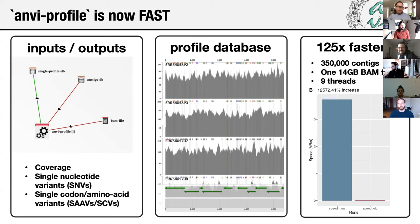In a test case with 350,000 contigs, one 14-gigabyte BAM file, run over nine threads, ANVProfile now runs in 58 minutes. In this particular case, ANVProfile runs about 125 times faster. In general, anyone who runs ANVProfile should experience at least a 10x gain in speed. So if you were suffering from that bottleneck, hopefully this solves your problem.